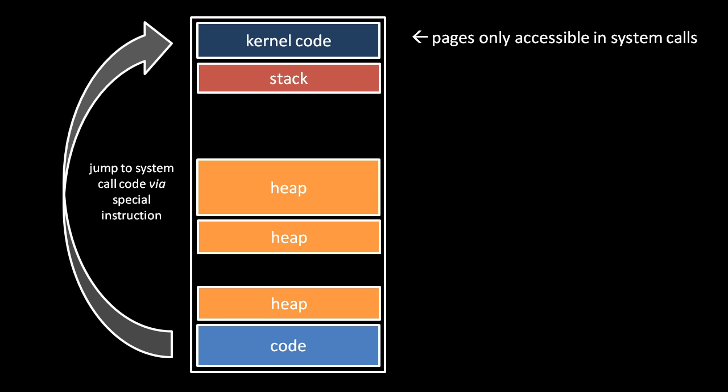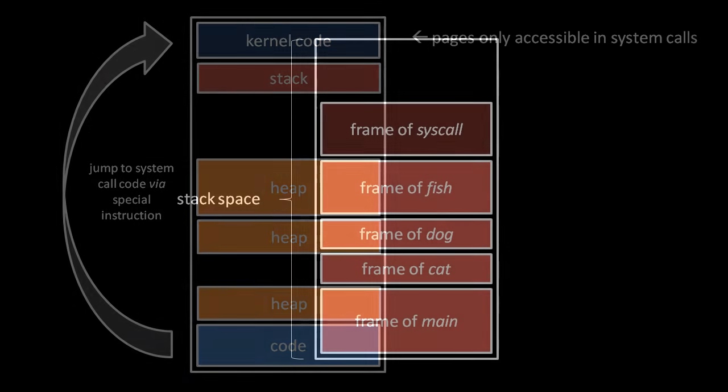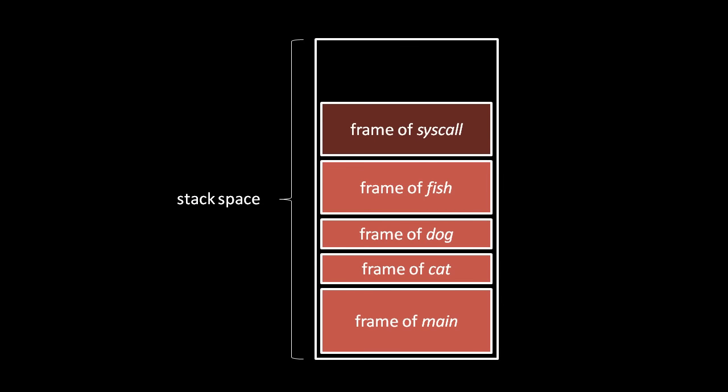When a system call is invoked, it uses the stack of the process to place a stack frame for that system call, just like with any other function. This allows system calls to execute in the context of the process which invokes them, and that avoids a context switch — meaning we don't have to swap out the memory tables of the current process. We can just leave the memory table for the current process in memory for the duration.